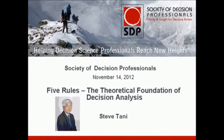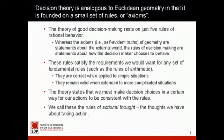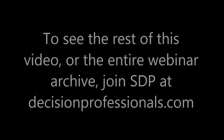If you think back to your high school days when you took a course in plane geometry, maybe with different levels of pain and pleasure, you may remember that the entire year's course was based on a small set of what were called axioms. An axiom is a self-evident truth, something we accept as true without it being proved. For example, the shortest distance between two points is a straight line — that's one of the axioms. Well, decision theory is analogous to Euclidean geometry in that it is also founded on a small set of axioms, or as we're going to call them, rules.